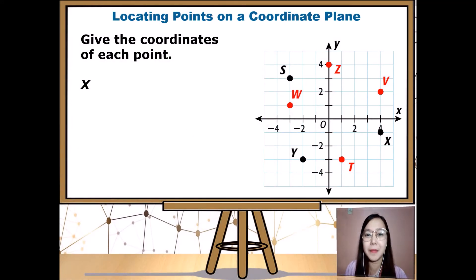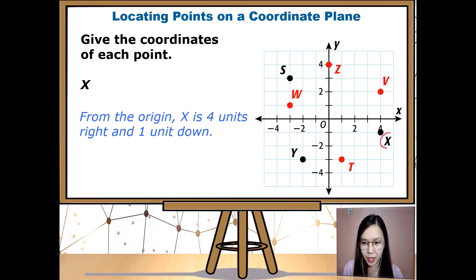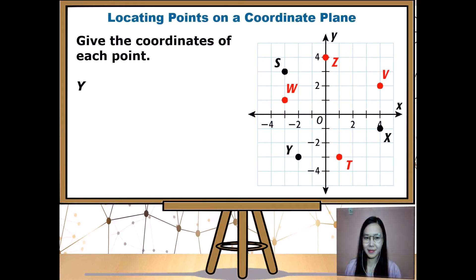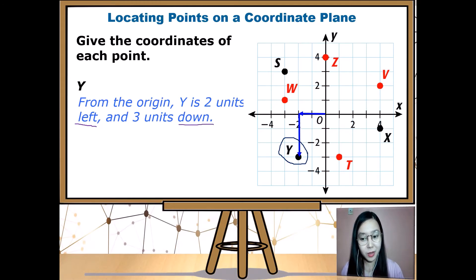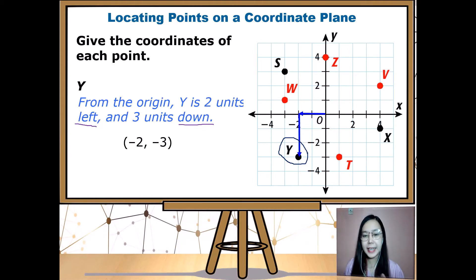Now let's give the coordinates of each point. Point X is four units to the right and one unit down from the origin. For point Y, it is two units left and three units down. Left is negative and down is also negative, so the coordinates of Y are (-2, -3) — both negative.